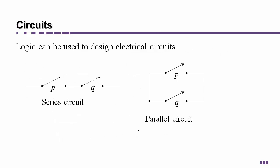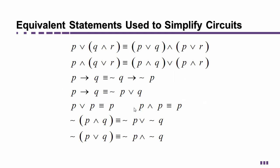Now we'll briefly talk about circuits. Logic can be used to design electrical circuits. Here's what's called a series circuit — the switches are in a line, so P has to be closed and Q has to be closed for the whole circuit to be closed. Here's a parallel circuit where only P, only Q, or both can be closed and the circuit is complete. Electricity could travel along the top if P is closed, along the bottom if Q is closed, or either way if both are closed. You can think of it like flowing water.